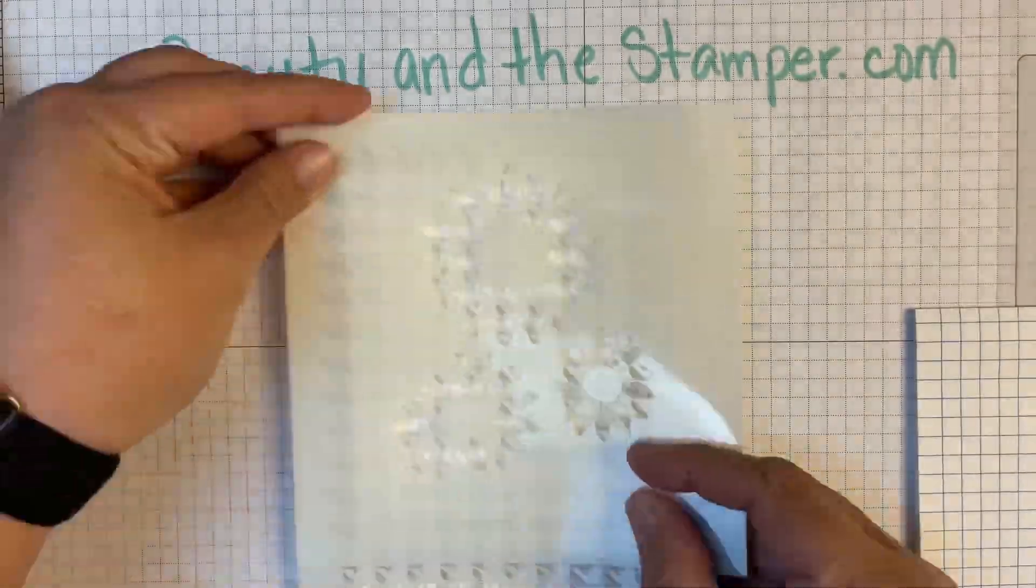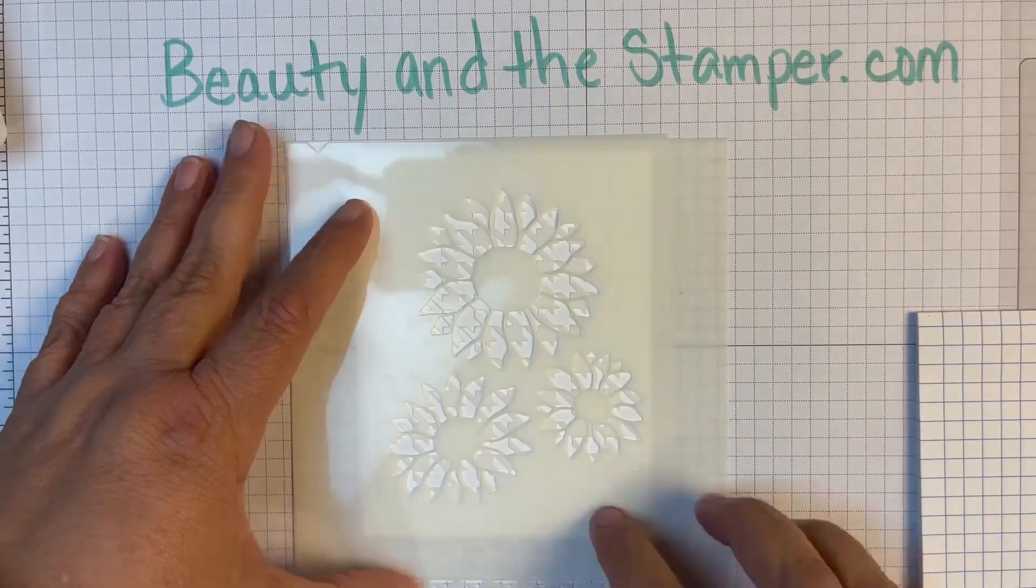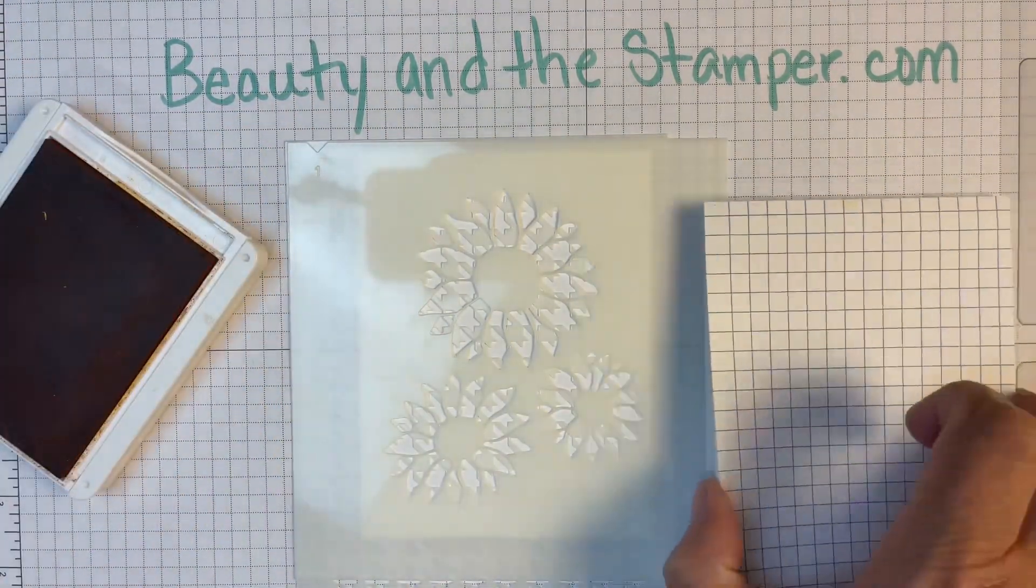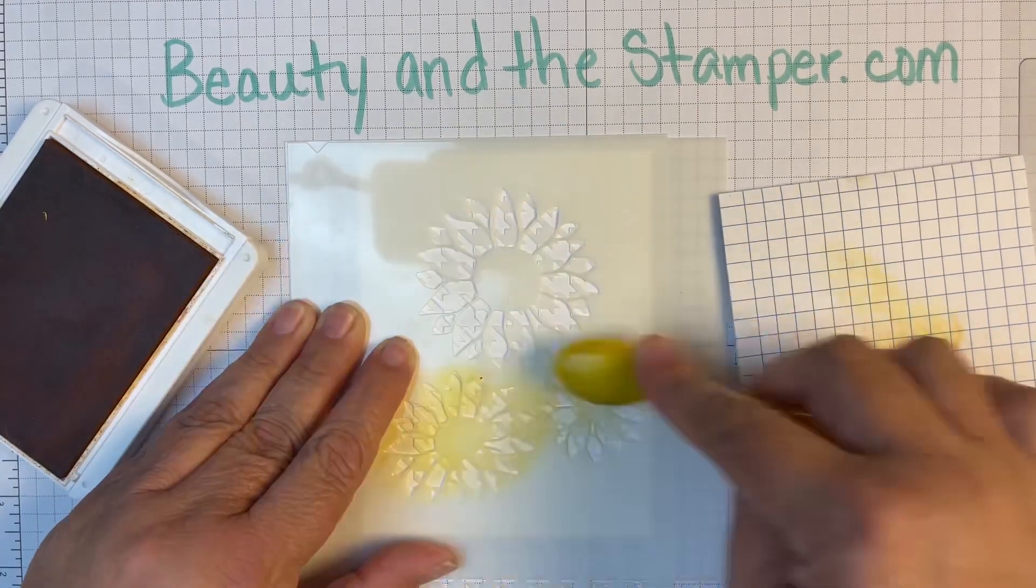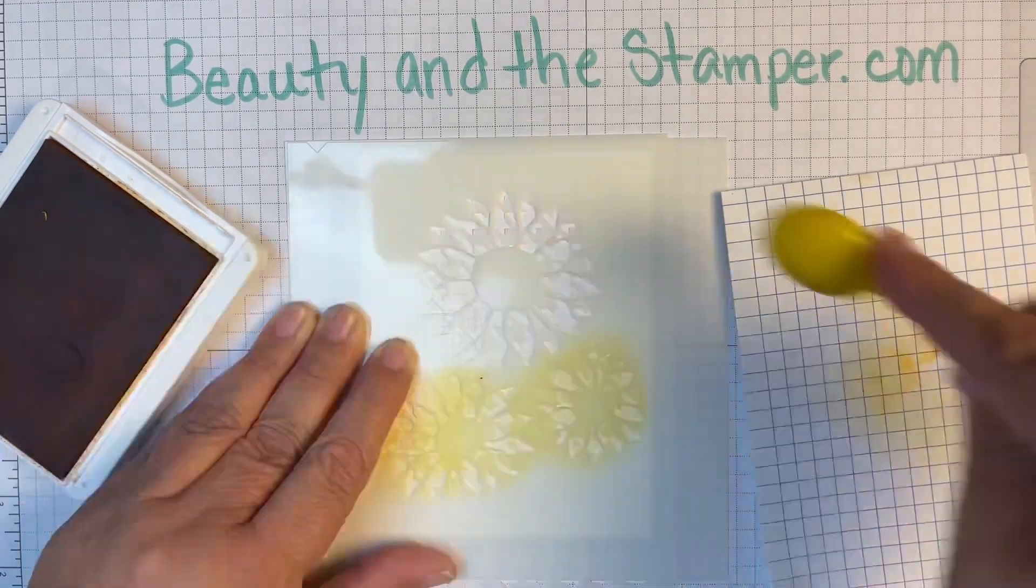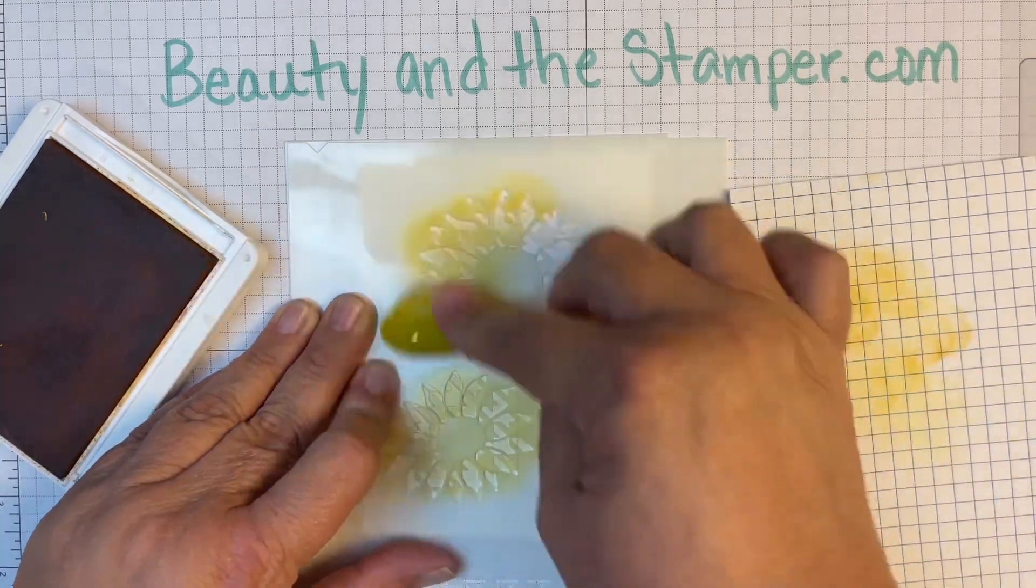Hi beauties, it's Jean with Beauty and the Stamper. Today I'm going to show you these artistic masks. We're going to make some sunflowers and I have two layers here: the houndstooth and the sunflower.